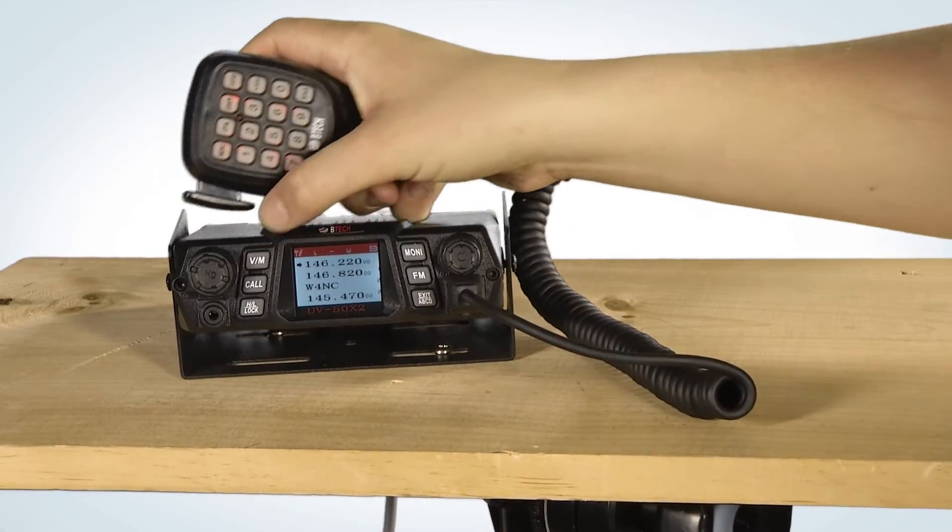The first step to field programming your radio is to set it into VFO mode. Next, make sure the channel you wish to use is empty.